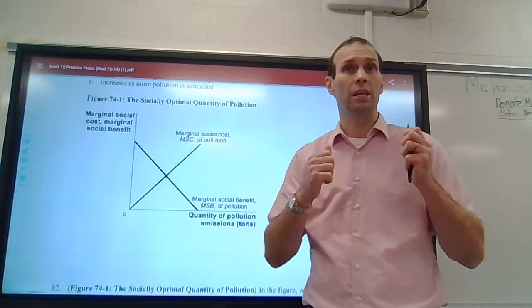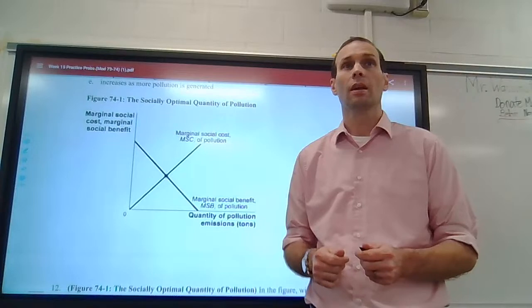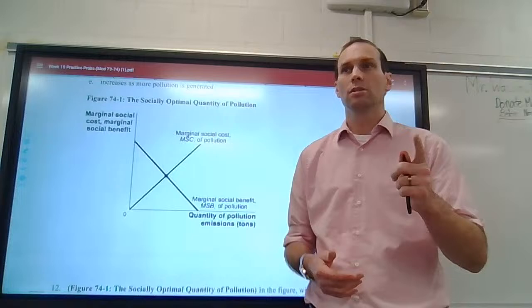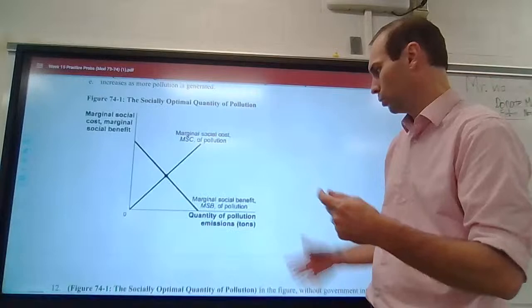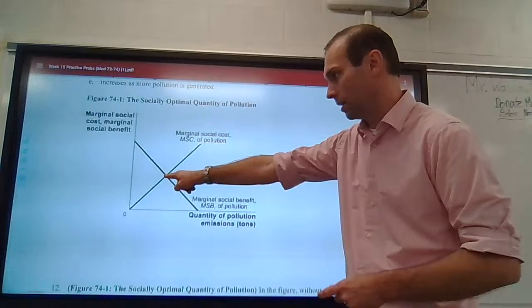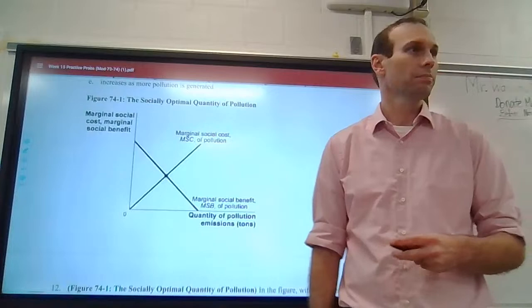Socially optimal quantity of pollution — we already know the socially optimal quantity will always be where? Not when marginal cost equals marginal revenue, because there's an externality. So we need to include the social cost. It's where marginal social cost equals marginal social benefit. That would be our socially optimal quantity and price for the good.